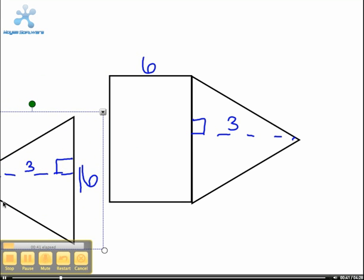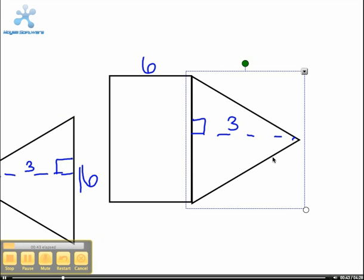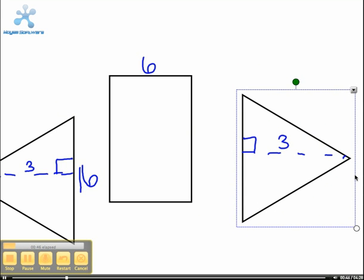That's a triangle. You can see we have two triangles and a rectangle. Now step two, find the area of them.